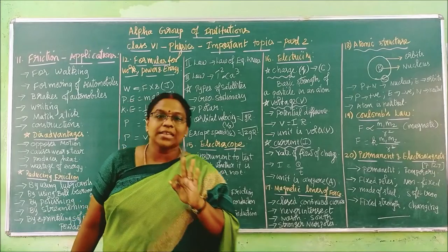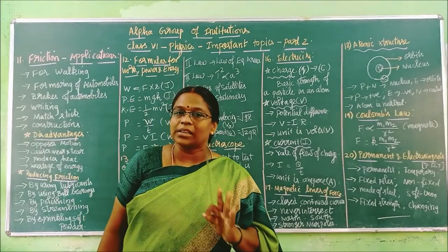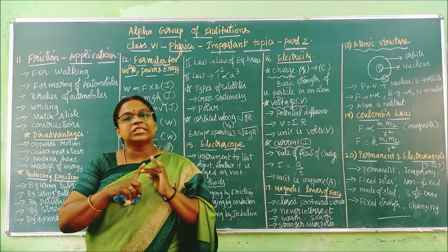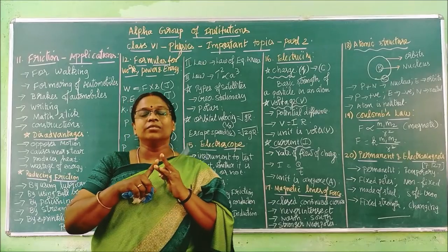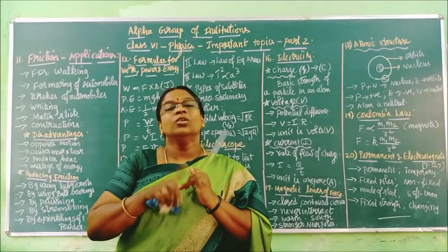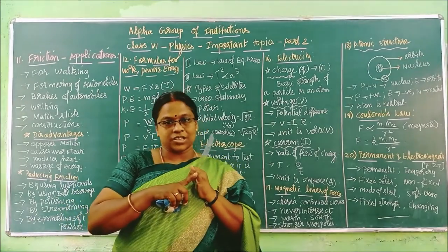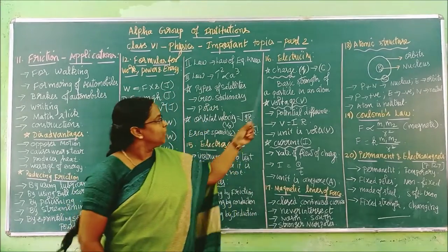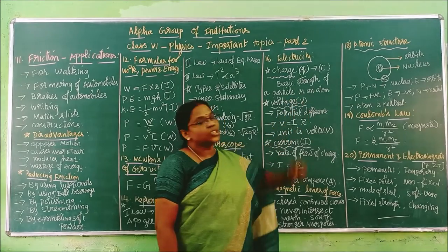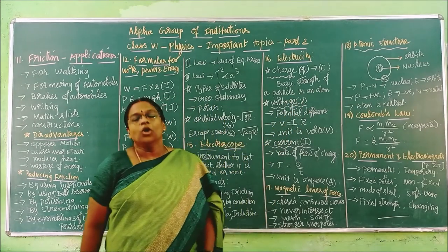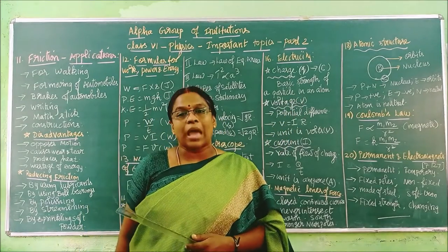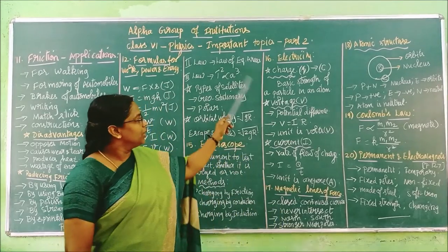There are three particles in an atom: protons have positive charge, electrons have negative charge, and neutrons have neutral charge. The symbol for charge is Q and its unit is Coulomb (capital C).